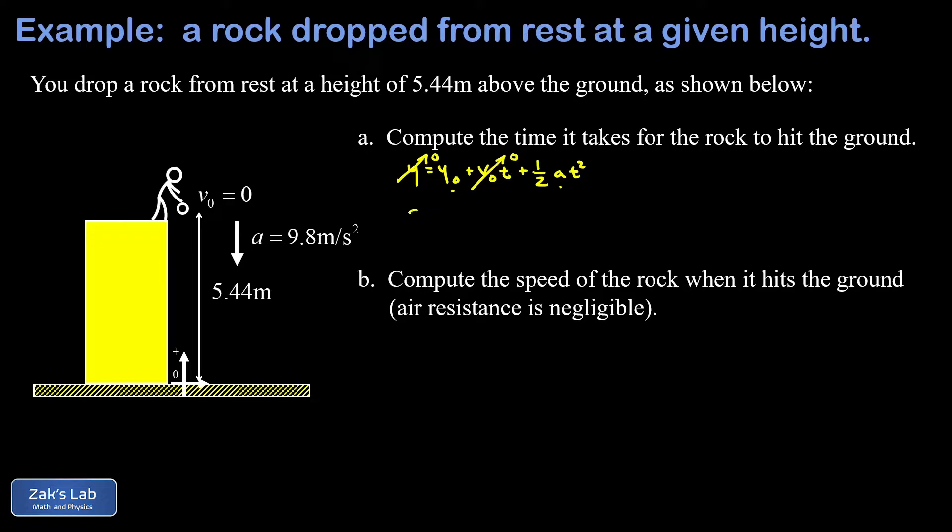So we plug in zero for our final y value, put in 5.44 for our initial y value. And then for A, we have to be faithful to our coordinate system here. A points downward and has a magnitude of 9.8. So that's going to be negative 9.8 meters per second squared. And then we have our unknown t squared.